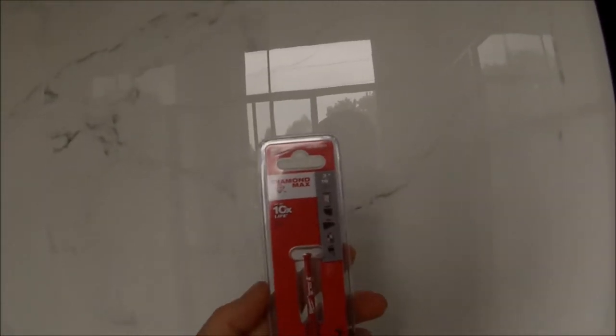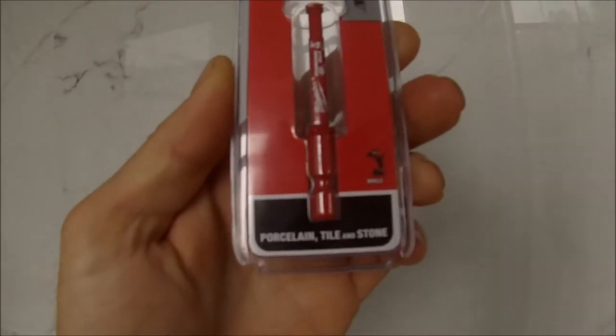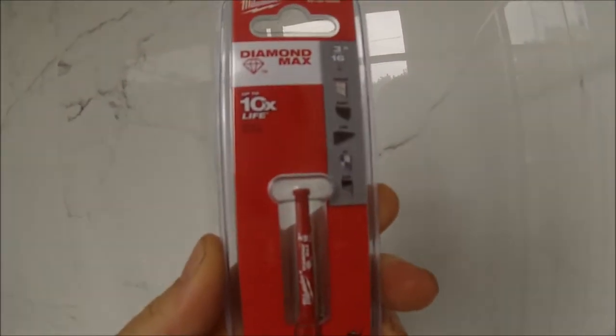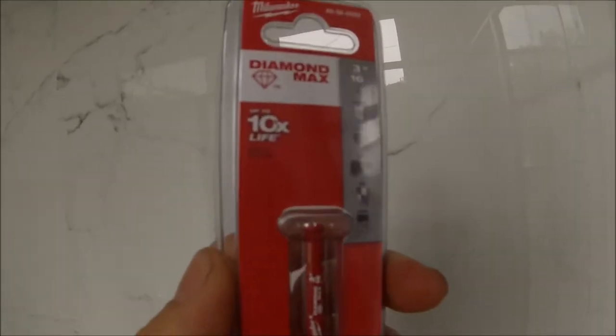Alright, if anybody's wondering what it looks like, here's the drill bit. And it says right there, porcelain tile and stone. This is a diamond, it has diamonds in it. I got the 3/16.